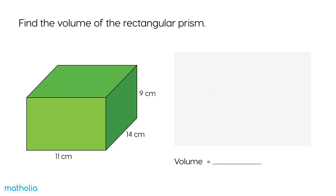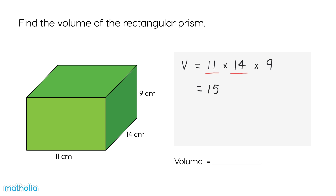Find the volume of the rectangular prism. We need to multiply the length by the width by the height. 11 times 14 is 154.